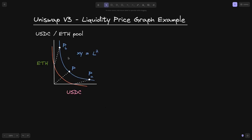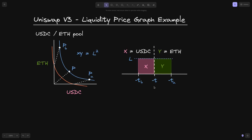Let's draw the USDC ETH pool. X will be USDC and the Y-axis will be ETH. Let's also imagine that between the price range P of A and P of B, there is some liquidity L and the current price is P. If we were to graph this on the liquidity price graph, you'll see that to the left of the current tick will be USDC and to the right will be ETH. Notice that in the previous video, we had X to the right of the current price and Y to the left. But here X is on the left and Y is on the right. Also notice that in the previous video, ticks were positive, but here they have a minus sign.